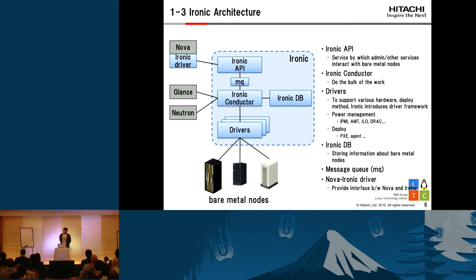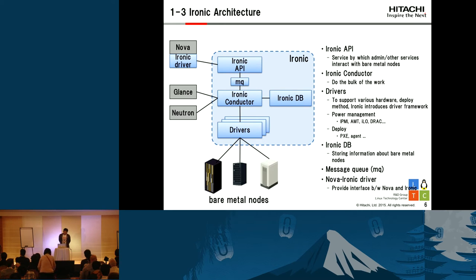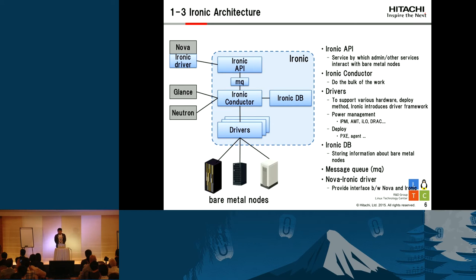Ironic API is a service by which administrators and other services interact with bare metal nodes. The conductor is a core component of Ironic and it does the bulk of the work. Ironic needs to support various hardware and deploy methods, so Ironic introduces a driver framework. For example, for power management, Ironic supports IPMI, iDRAC, and for deployment, PXE and Agent drivers. Similar to other OpenStack projects, Ironic uses a database to store bare metal information, and it also uses a Message Queue to communicate inside the Ironic project.